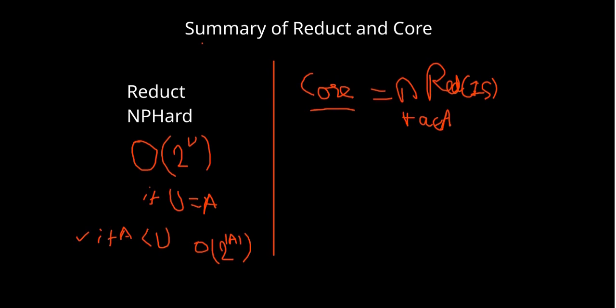As we can see, finding the minimal subset is 2 to the power of |A| and it is an NP-hard problem. To solve this problem, instead of looking from the indiscernibility point of view, we are trying to minimize the computational cost by using the discernibility matrix rather than the indiscernibility relation. So a new concept introduced in this video is the discernibility matrix.